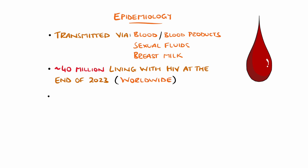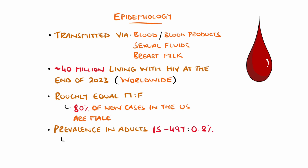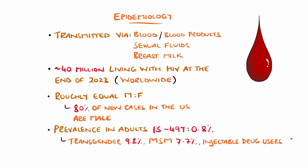The prevalence is roughly equal between males and females, but 80% of new cases in the United States are male. Overall, the prevalence for adults between 15 and 49 years of age is 0.8%, but is higher in some populations, including transgender people at 9.2%, men who have sex with men at 7.7%, injectable drug users at 5%, and commercial sex workers at 3%.